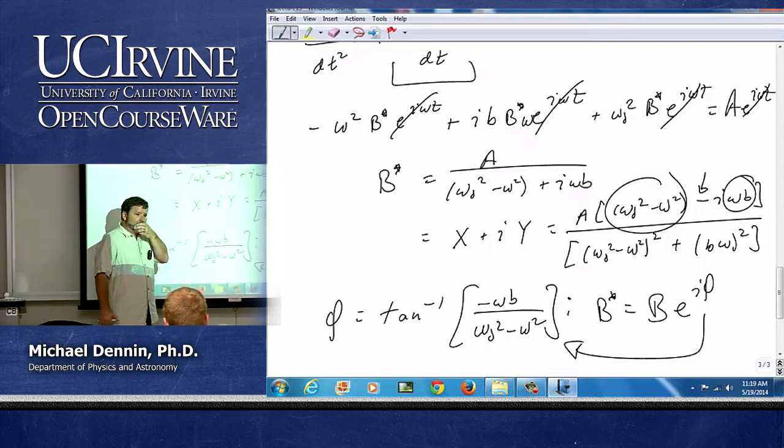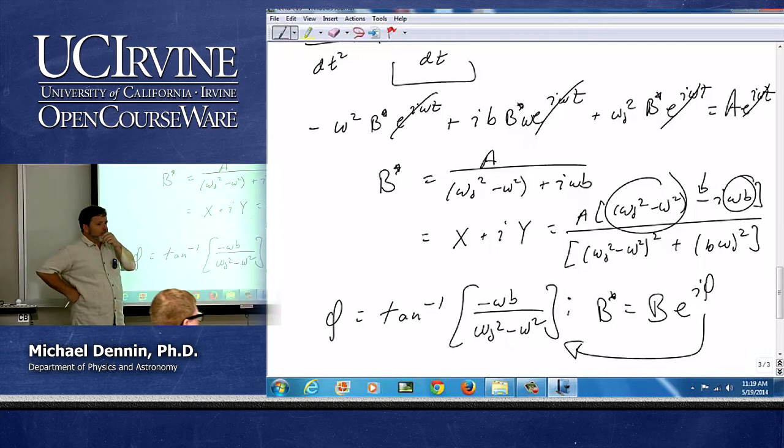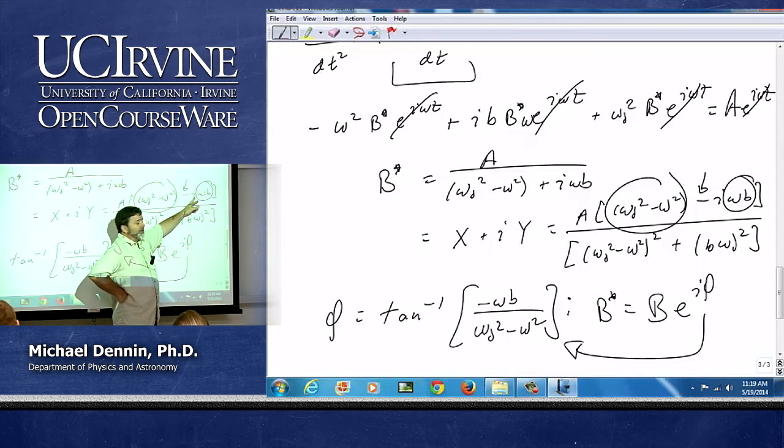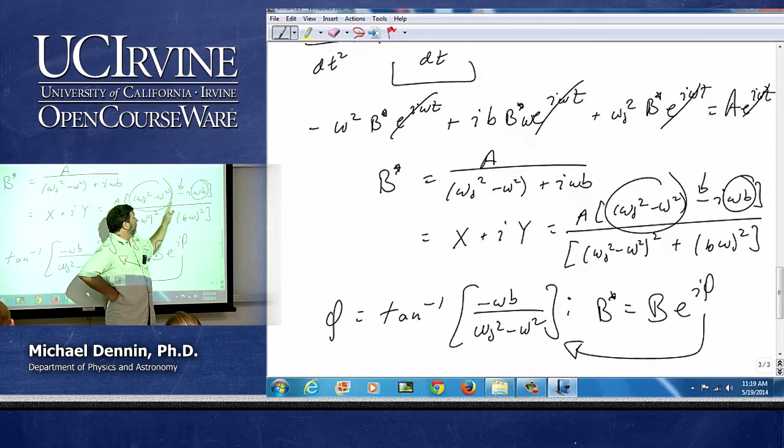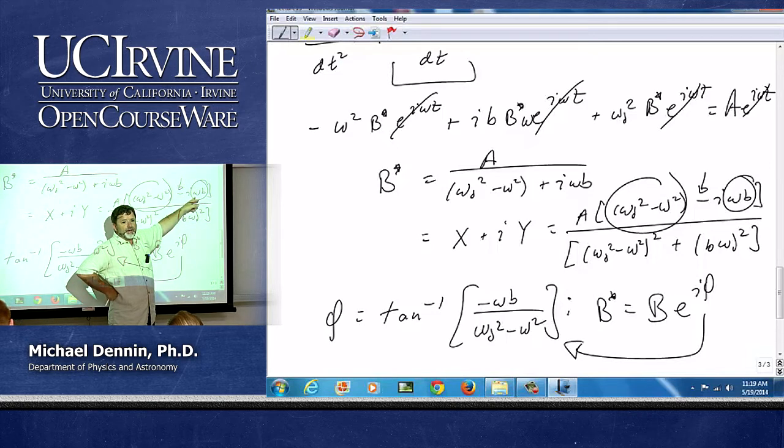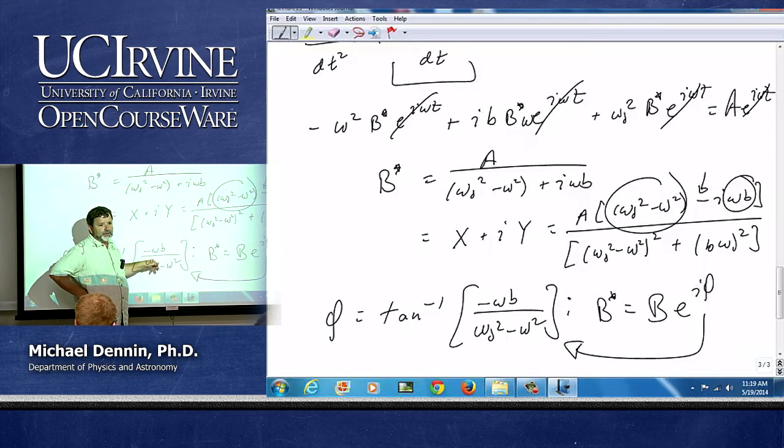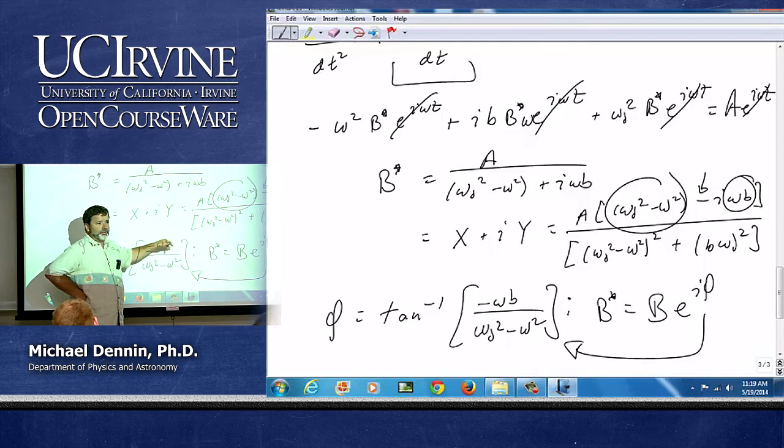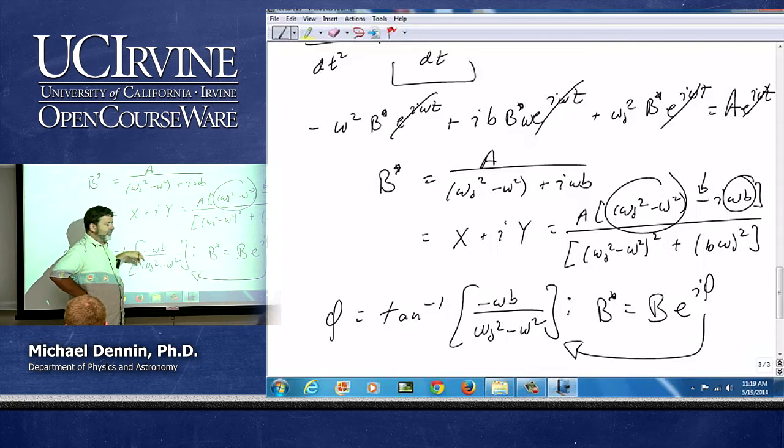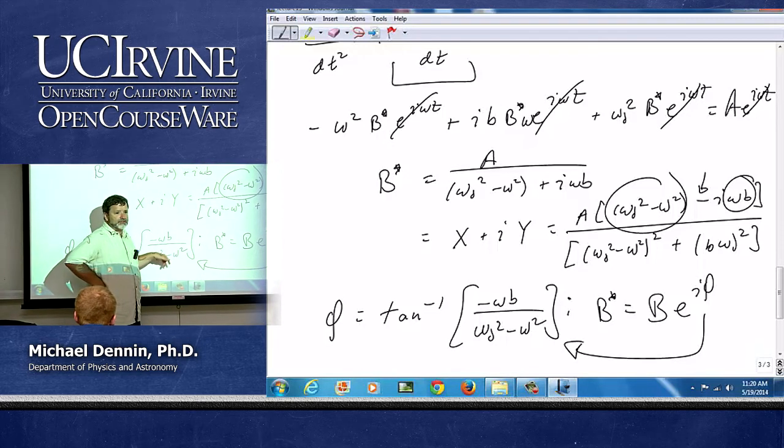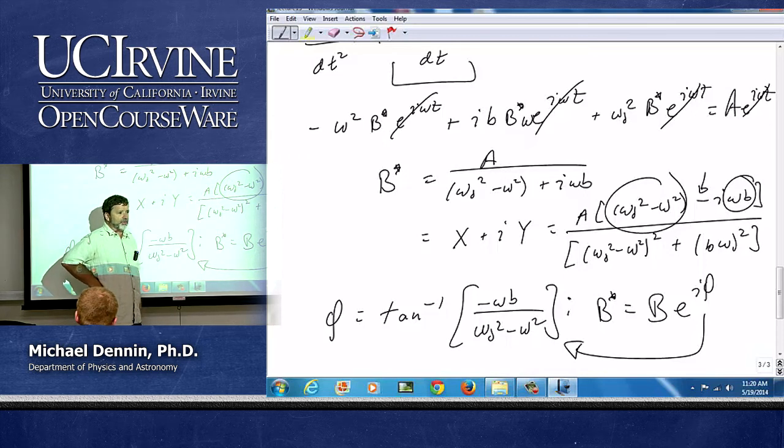I have to worry about it if I care about the amplitude. But for the phase, all I care about is the ratio of this to this with the minus sign. So the phase is the tangent inverse of minus omega b over omega naught squared minus omega squared. Because remember, the phase is the tangent inverse of y over x, so whatever's down here is going to cancel out when I do y over x. And if you think about it, remember I said fully 90 degrees out of phase is just multiplying by i. So if the real part is 0 and this is something, then you're 90 degrees out of phase. And notice b in this case controls completely. If b is 0, the phase shift is 0. So if there's no damping, there's no phase shift. And as b increases, you increase the phase shift.